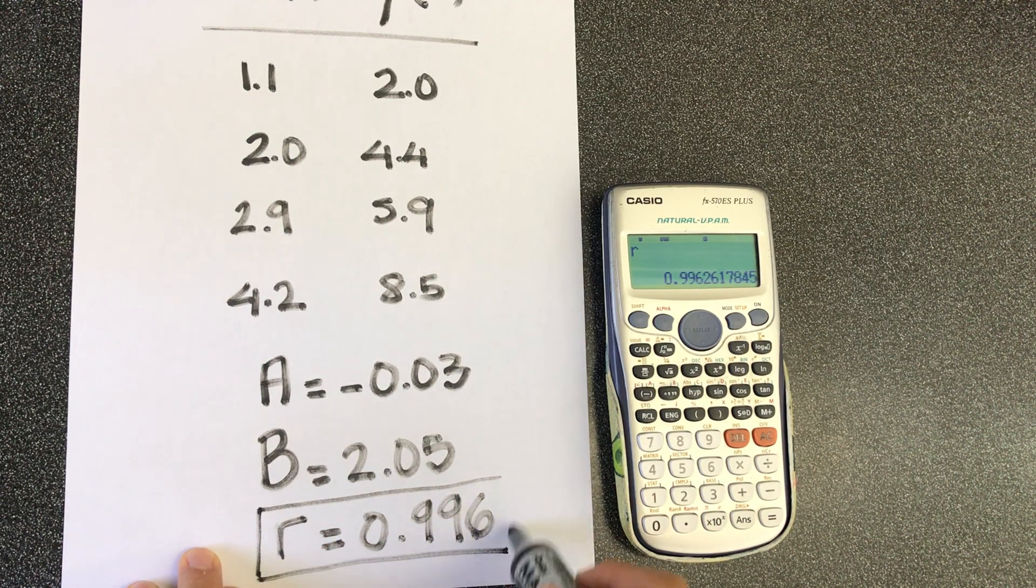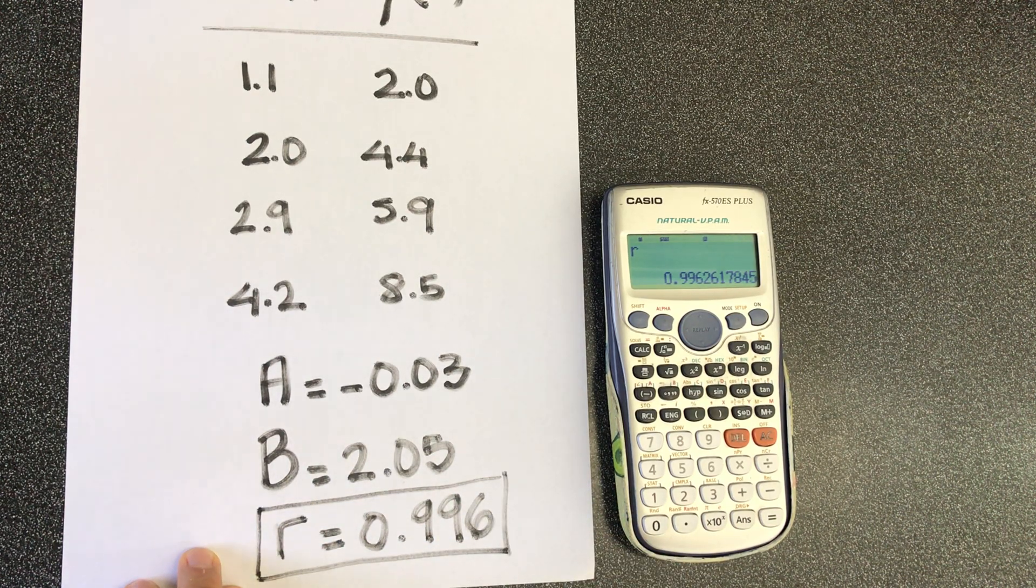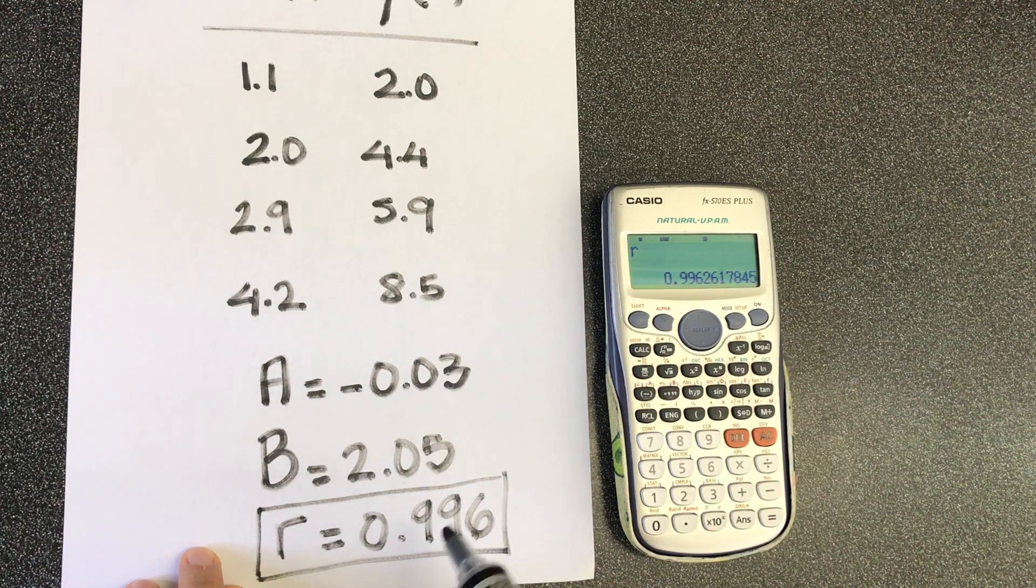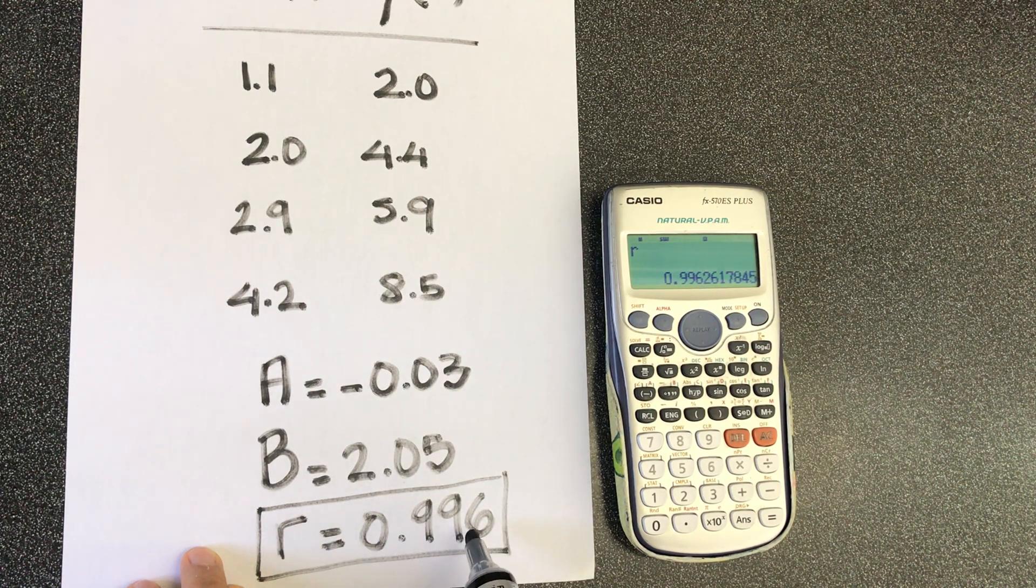The closer to 1 it is, the more linear your function is. So, as you can see, that we're definitely dealing with a straight line, since R is 0.996.